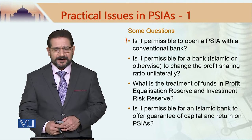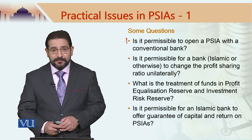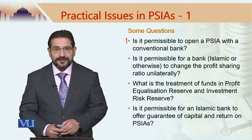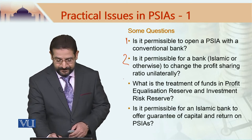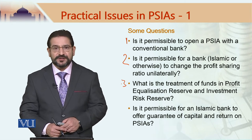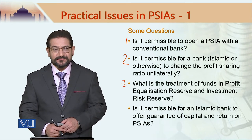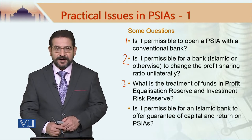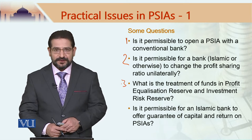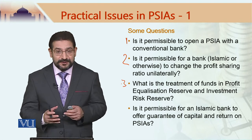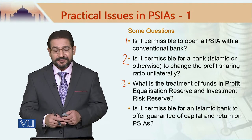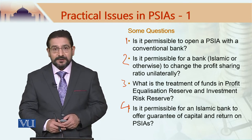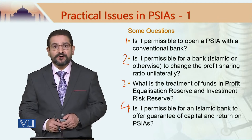This is a valid question and we would see what its answer is. Question number two: is it permissible for a bank, Islamic or otherwise, to change the profit-sharing ratio unilaterally? Question number three: what is the treatment of funds in profit equalization reserve and investment risk reserve? We studied the use of these reserves for smoothening of profits — the question is what could be the treatment of funds left in these two reserves. And number four: is it permissible for an Islamic bank to offer guarantee of capital and return on profit-sharing investment accounts?